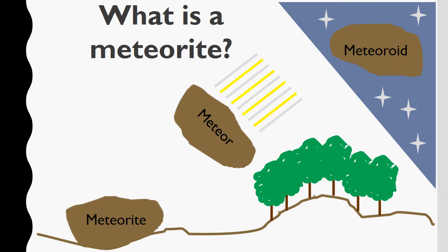Most people think of a shooting star, but there's more to it. It all starts in space as a meteoroid. A meteoroid is a rocky or metallic object that orbits the sun and is smaller than an asteroid. Meteoroids are fragments or material ejected during a collision — from an asteroid or a comet. Sometimes this material enters the Earth's atmosphere and we call it by a new name: a meteor.